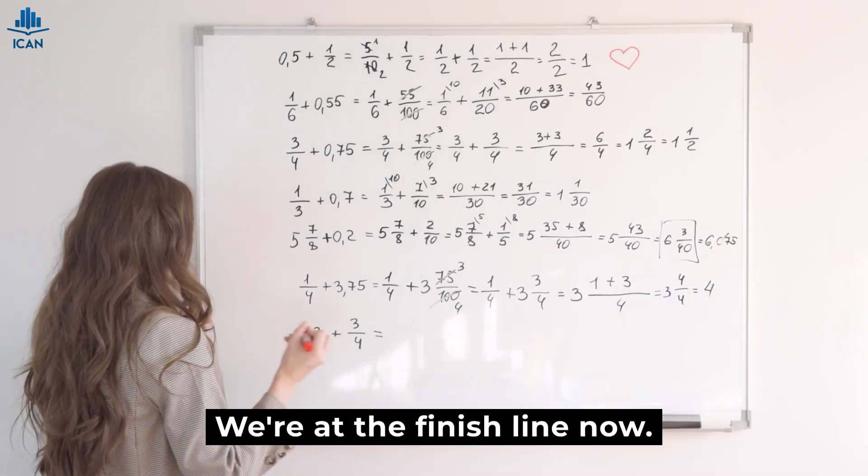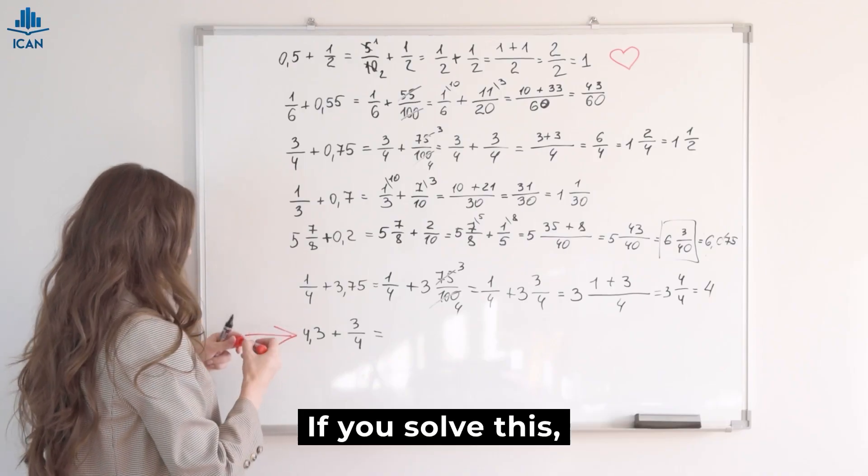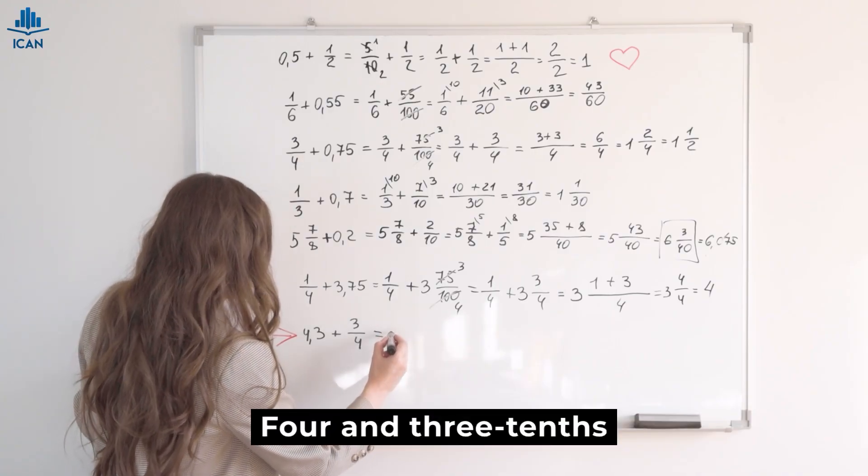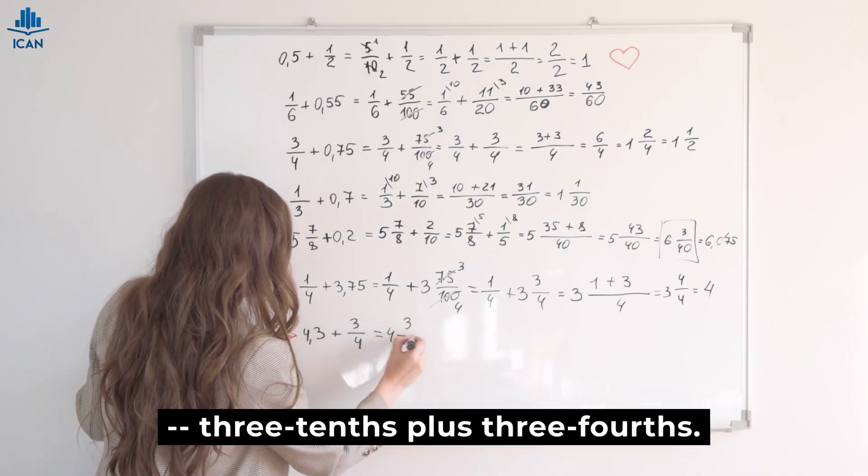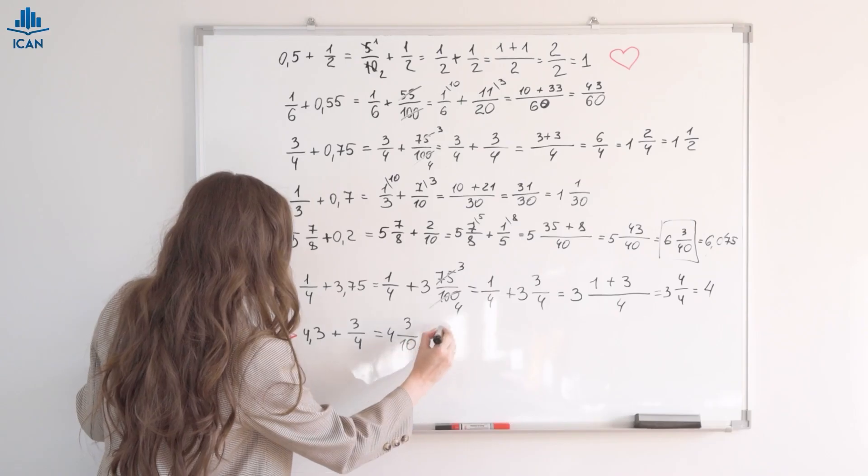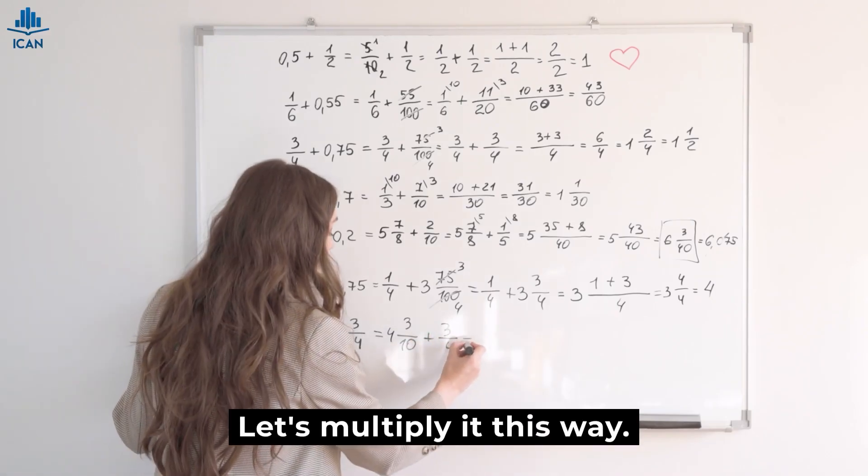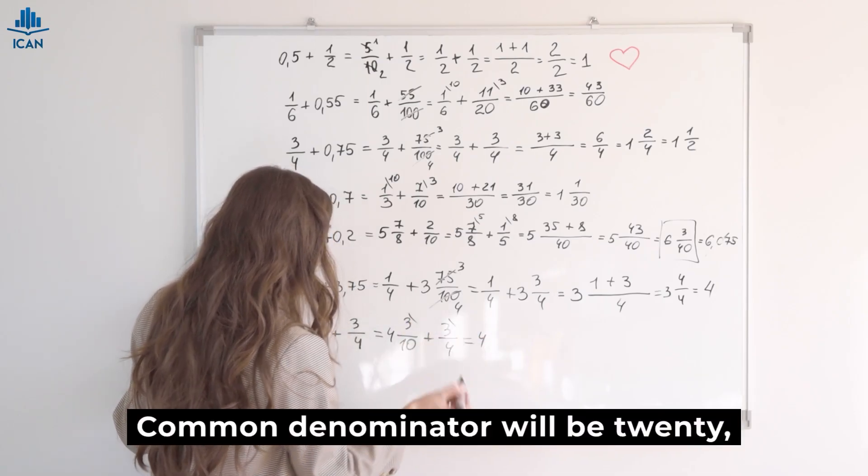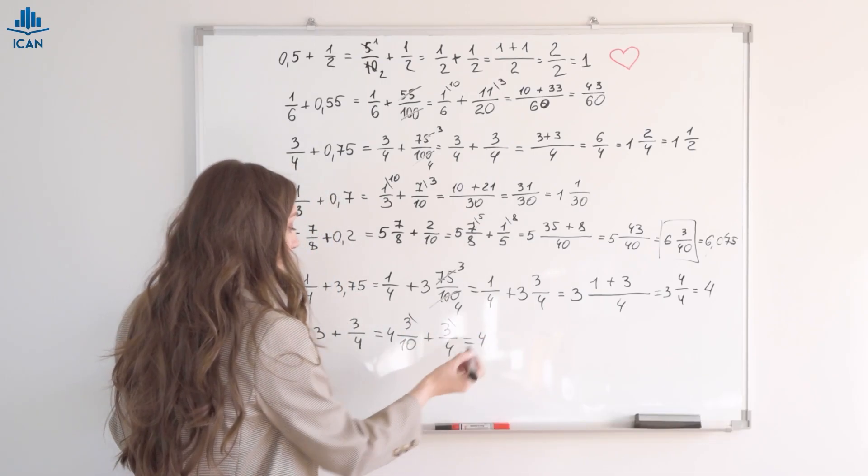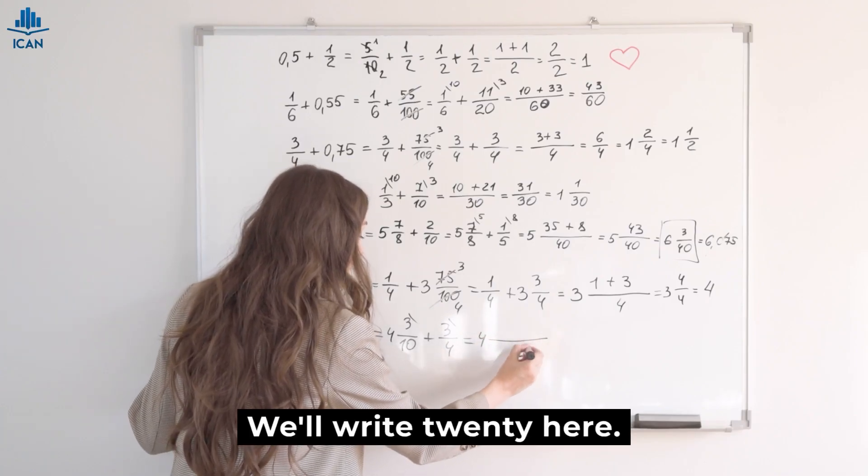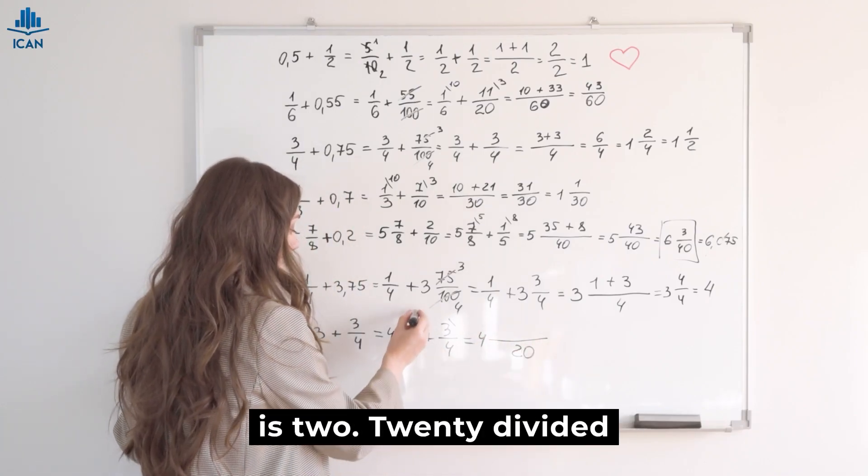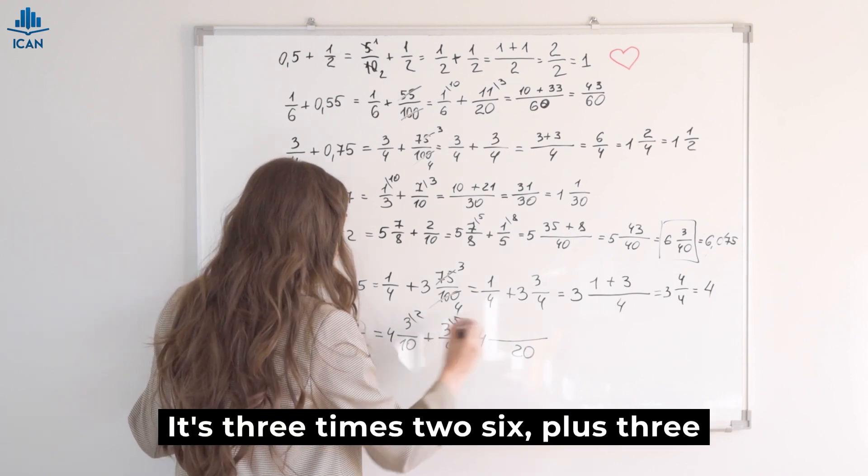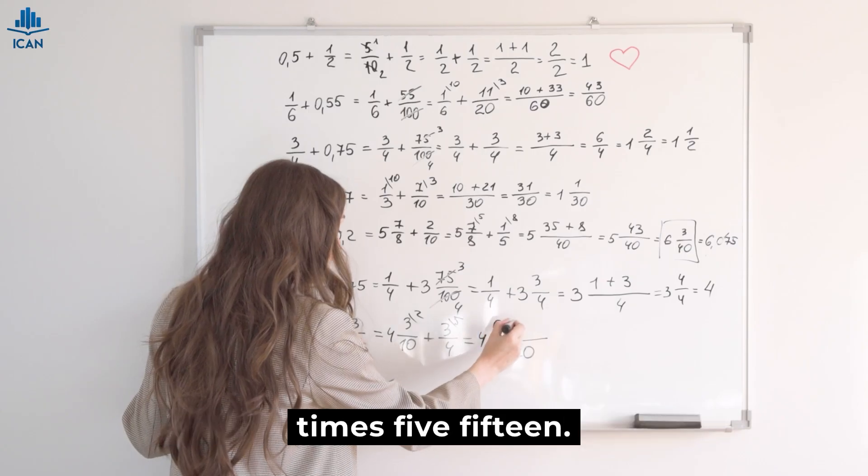We're at the finish line now. If you solve this, you're doing great. Four and three-tenths. Three-tenths plus three-fourths. Let's multiply it this way. Common denominator will be twenty, right? We'll write twenty here. So twenty divided by ten is two. Twenty divided by four is five. It's three times two, six, plus three times five, fifteen.